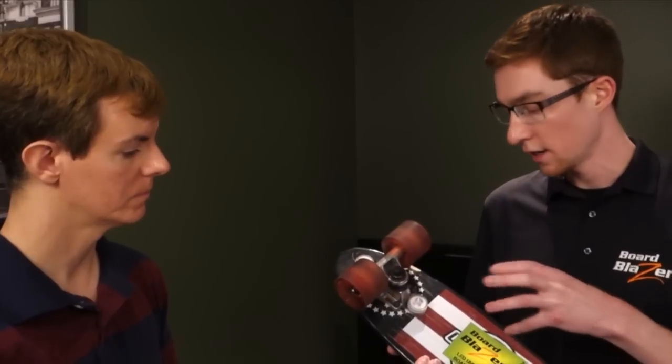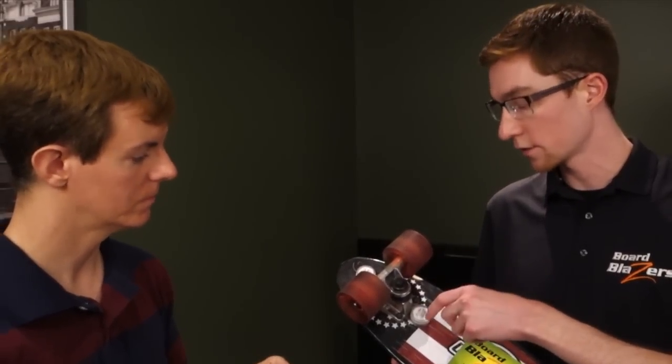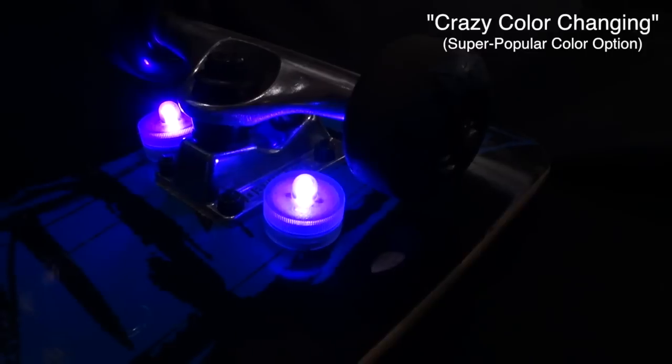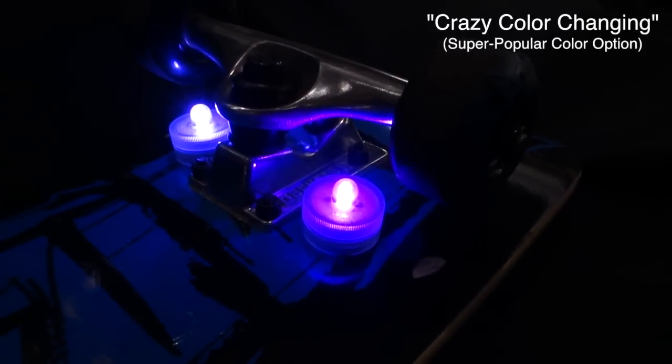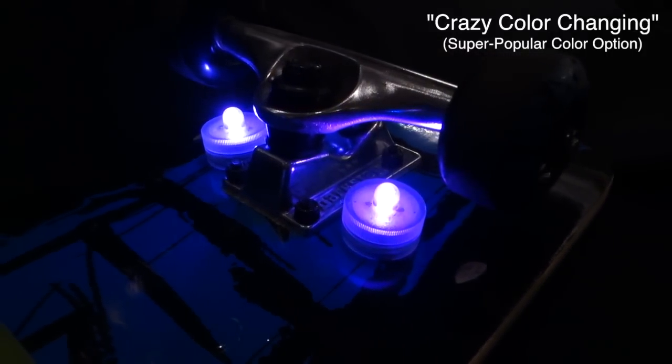So each light is a small self-contained unit. It's got two little lithium batteries in it, like little watch batteries. They last about 30 hours. And to turn the lights on, you just twist it on and off here. It's really remarkably easy and they're super durable. So you can put them wherever you want on the board.